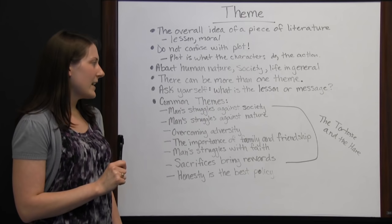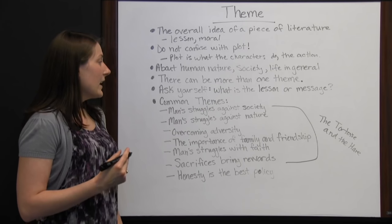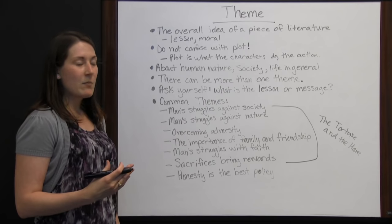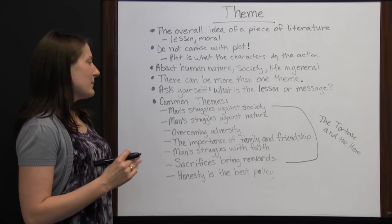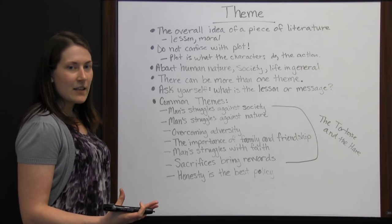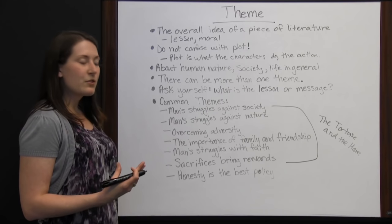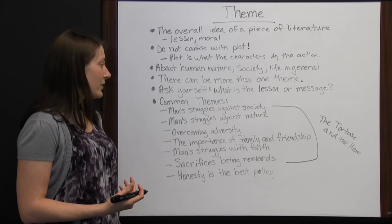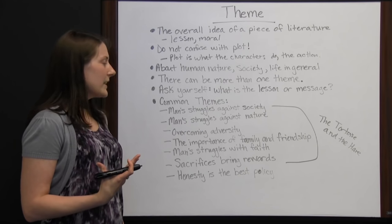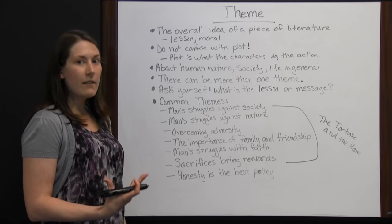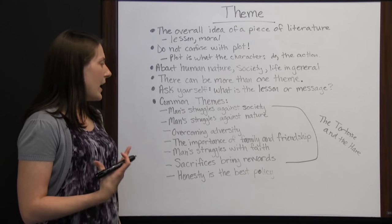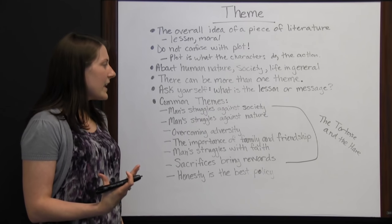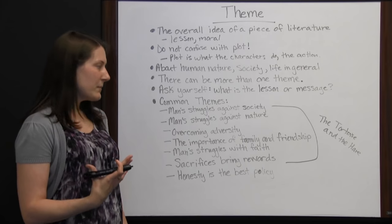Man struggles against society — the tortoise feels like he'll keep going and try to win the race, but society is against him, saying the hare has him beat. Man struggles against nature — the tortoise is struggling against his own nature, since he obviously won't be as fast as the hare. He has to go up hills and fight against his very nature while the hare is built to go much faster.